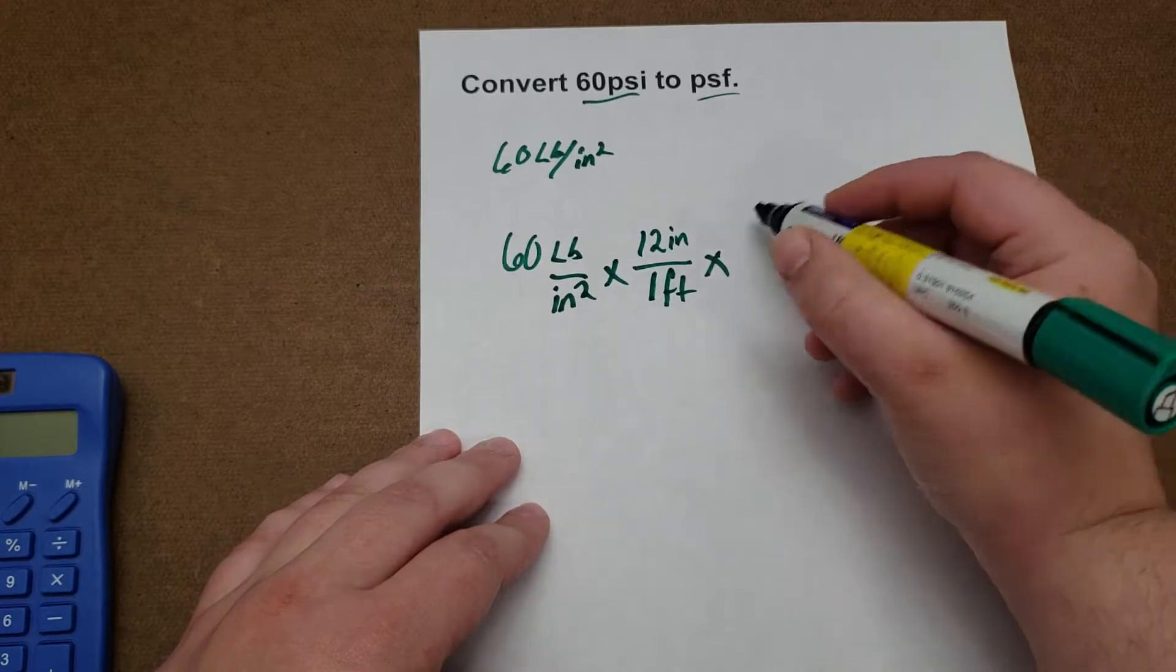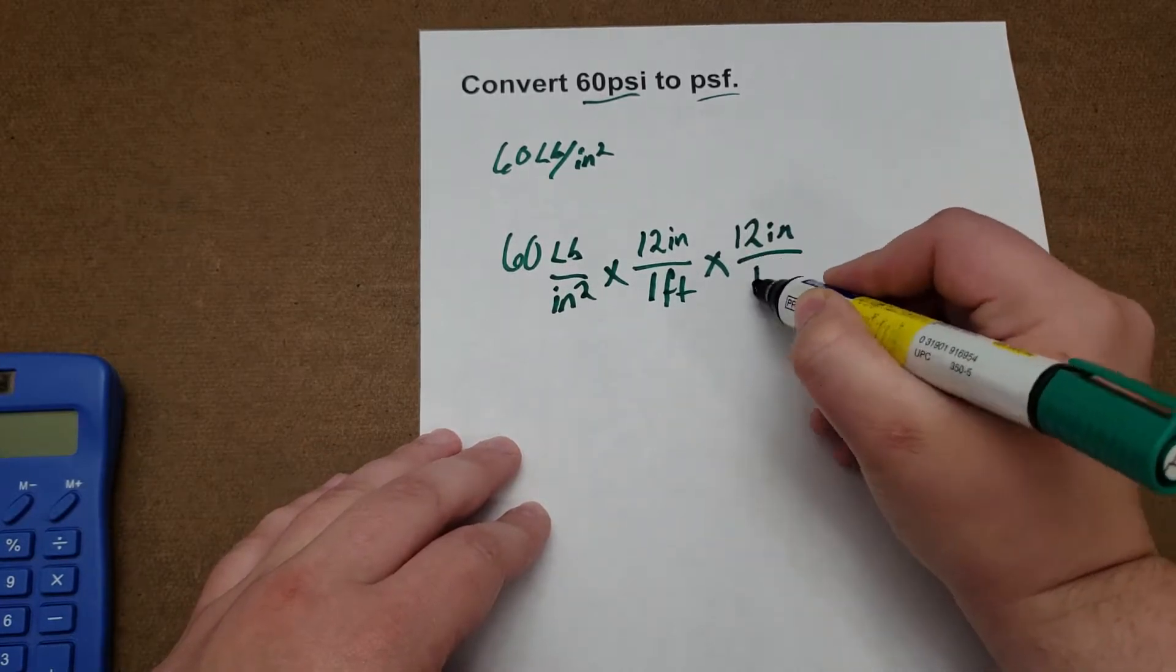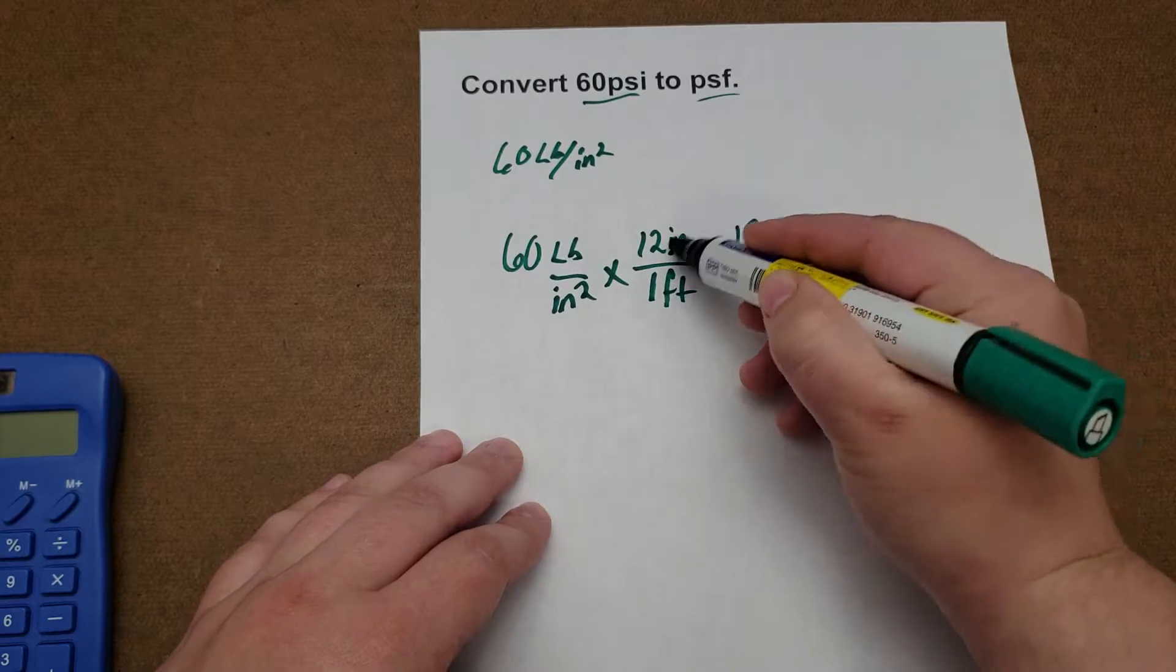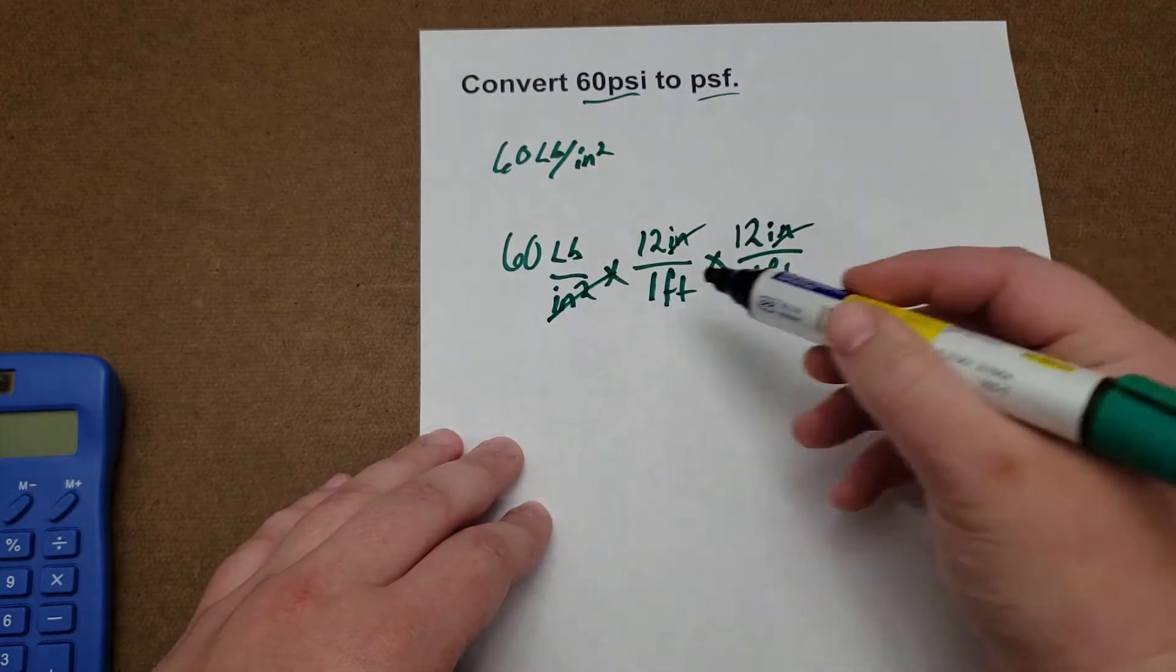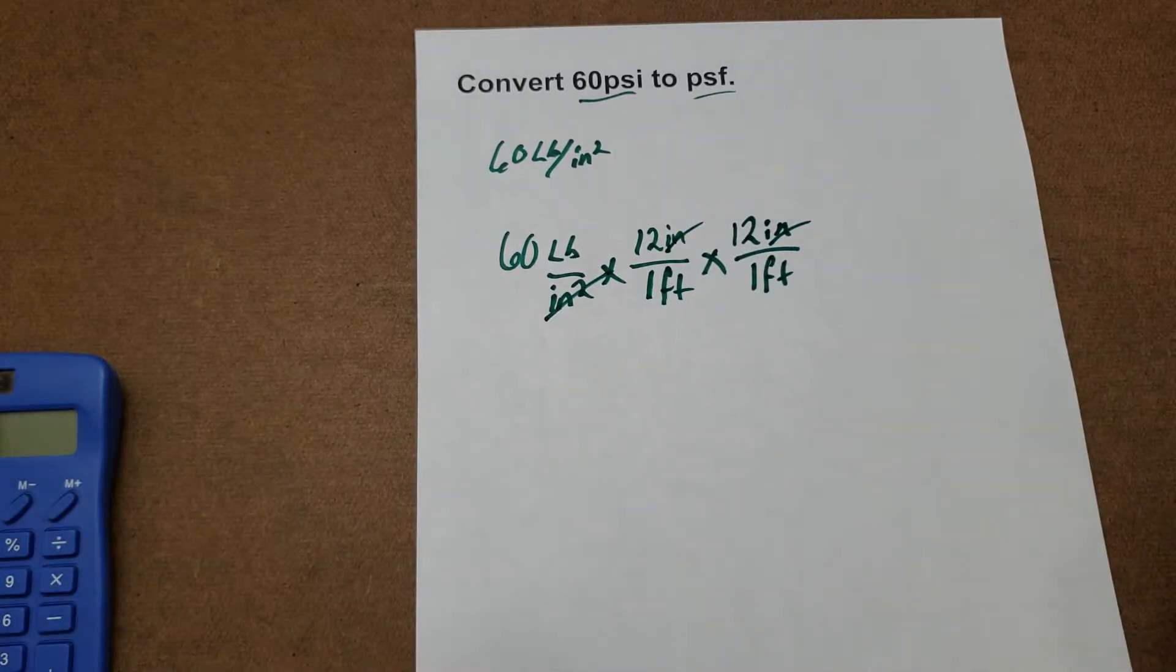We have 2 inches, so we have to do this twice so that these will both cancel out with that. You have 2 feet, so you have pounds per square foot.